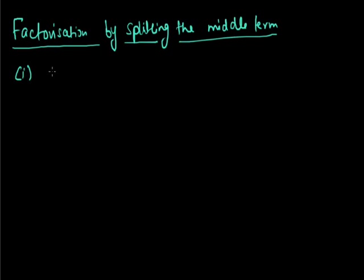Let us write down the example: x² + 5x + 6. To do the factorization, we need to split the middle term. There is a pattern to follow: by splitting the middle term into two parts, the summation of those parts will equal the middle term, and the product of those parts will equal the product of the first and last terms.